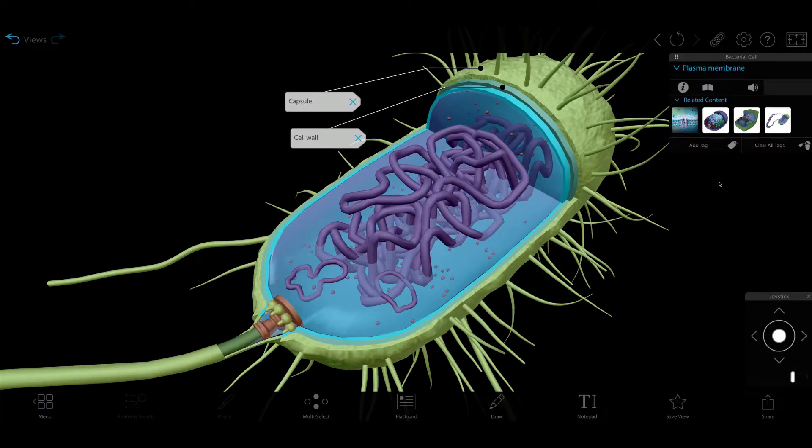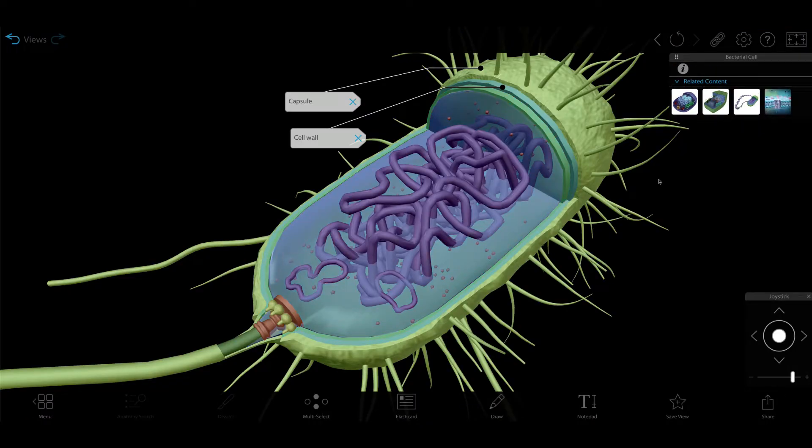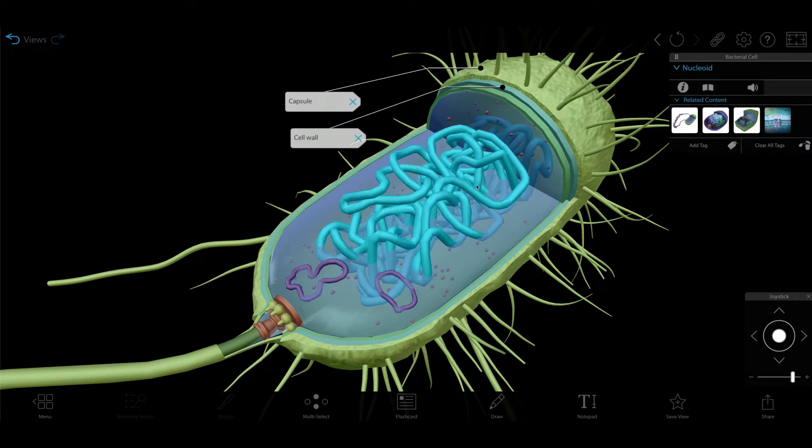Prokaryotes also need genetic material to encode instructions for how to build and repair themselves. This material is a bit different than yours and mine because it's not held within a nucleus. In fact, prokaryotes don't have any membrane-bound organelles. Instead, the genetic material, specifically DNA, is in a region called the nucleoid and is able to float freely.